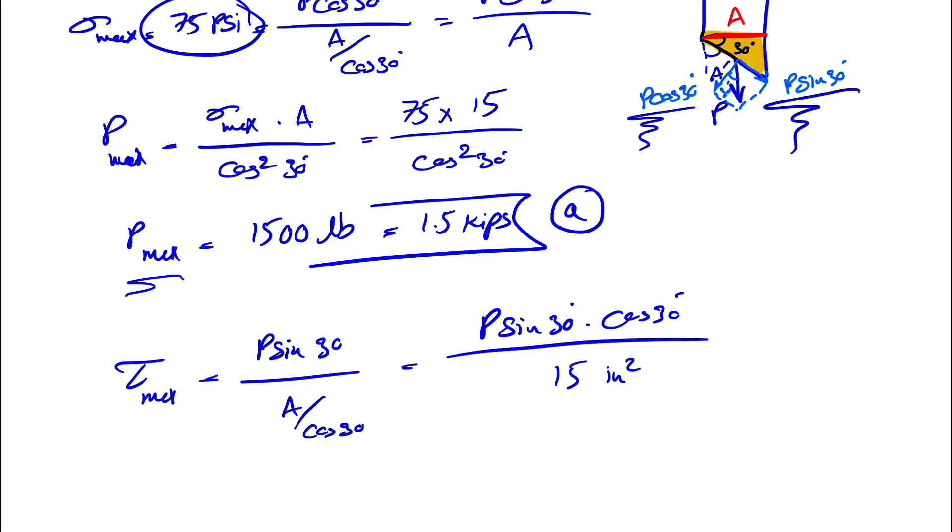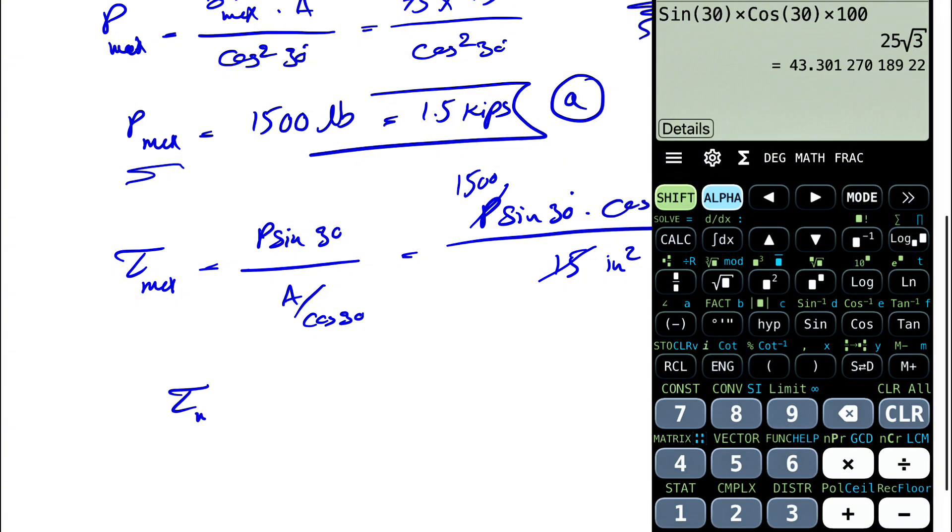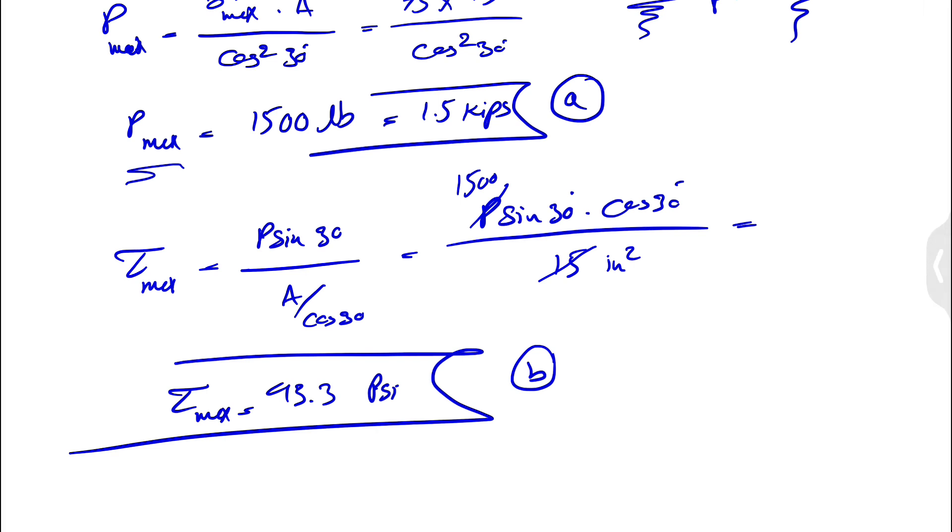And the P here, we can use either pound or kips, really doesn't matter, let's go with pounds in order to get it in PSI. So basically we have sine of 30 degrees times cosine of 30 degrees times 100. So this is going to give us 43.3 PSI as the final answer for part B of the question.